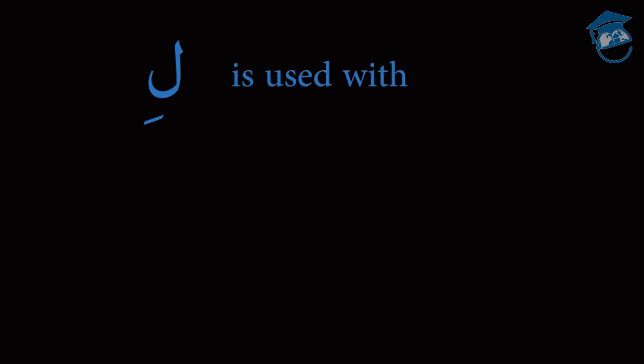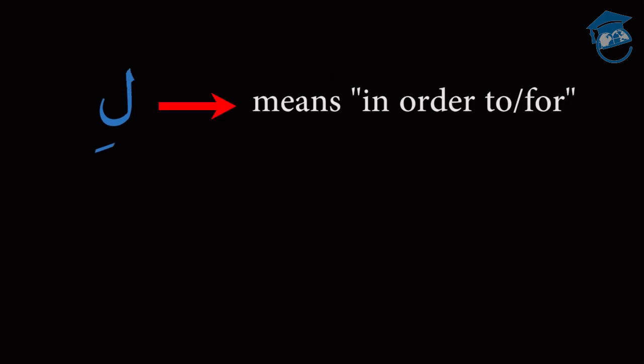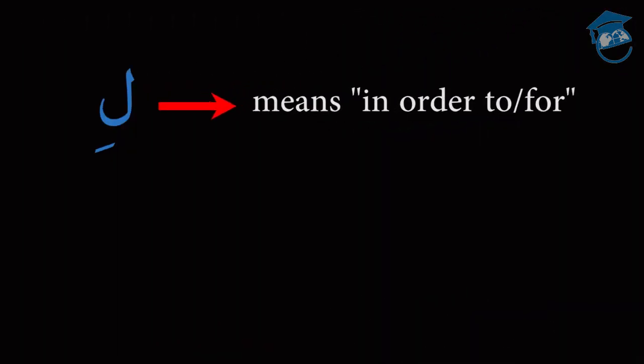Let's begin with li. Li is used with the mazdar, or alfa'al al-mudara, the present tense verb. It means in order to or for. Li is used to express a reason or purpose for doing something, and corresponds to the English in order to or for.